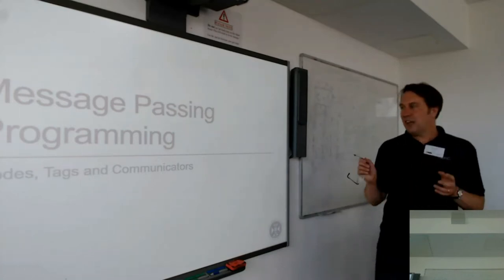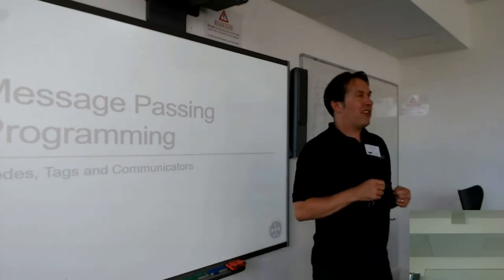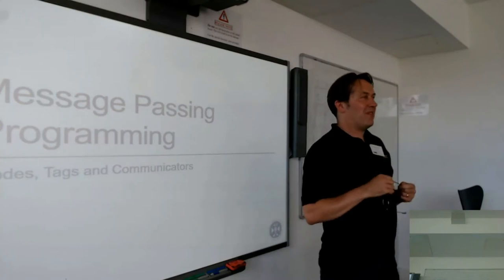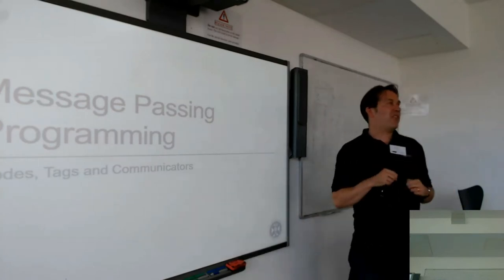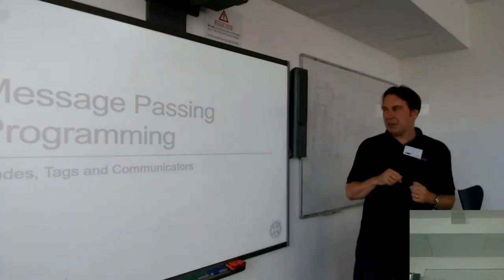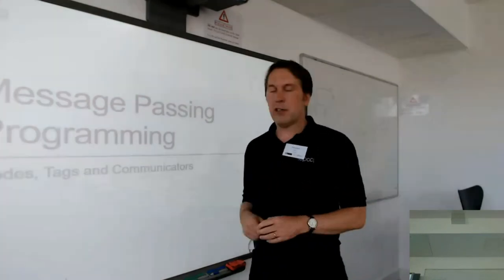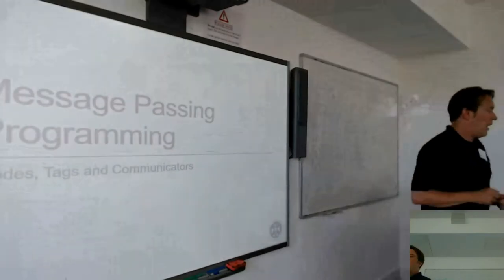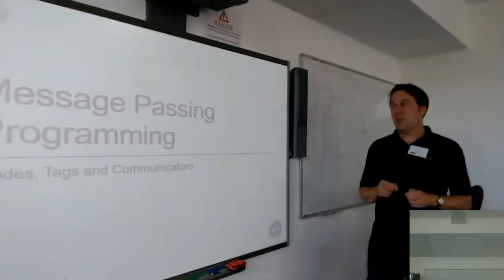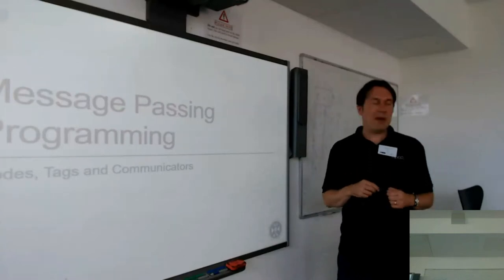What I want to do is try and explain three things. I'm just going to start the lecture now. We'll come back to the example immediately after I sort the button. The three things which are very commonly misunderstood in MPI: modes, tags, and communicators — all of which are features of point-to-point messaging.